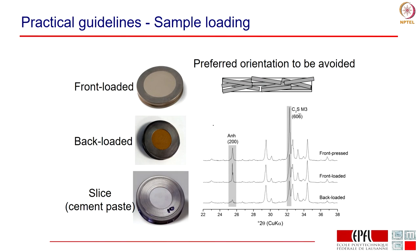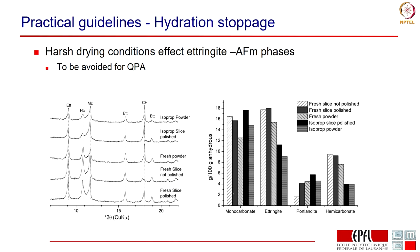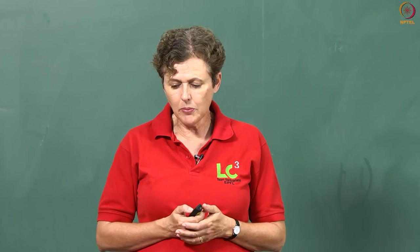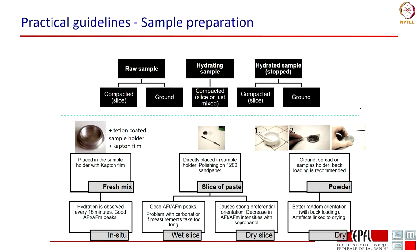Here we can see the impact of the different loading techniques in terms of preferential orientation — back loading gives the best situation. The second point, as already mentioned, is the stoppage of hydration. Ettringite is the most affected phase. Generally for preserving monocarbonate and ettringite, fresh slices are the best. But if you have a slice and do not do any rough polishing then you can have a bad impact on your portlandite. The technique we recommend is fresh slices with just a light amount of polishing on emery paper.